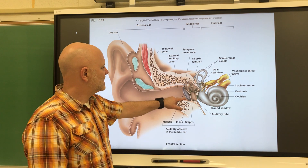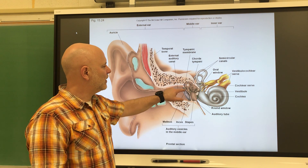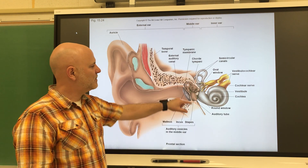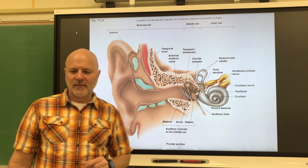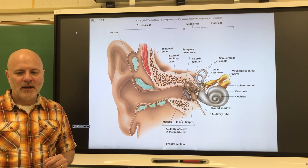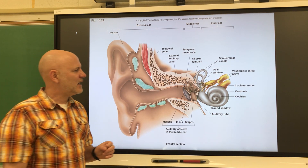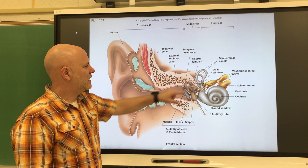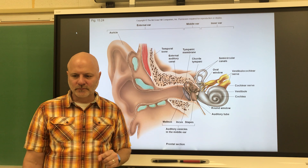The outer layer of the tympanic membrane is skin. The inner layer is actually mucous membrane. It attaches to the malleus, right there.